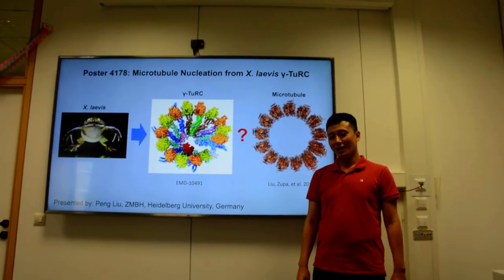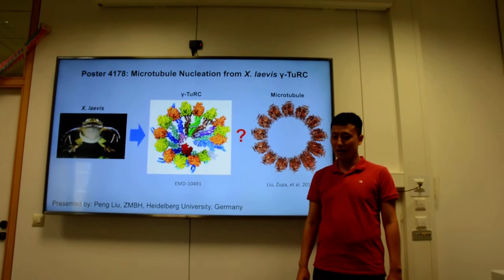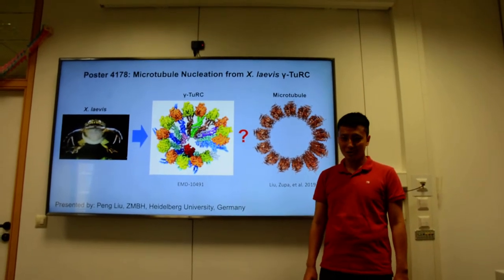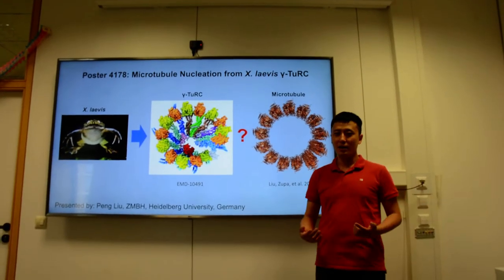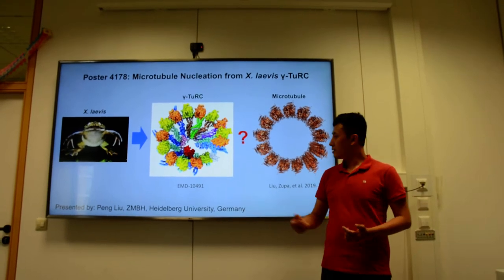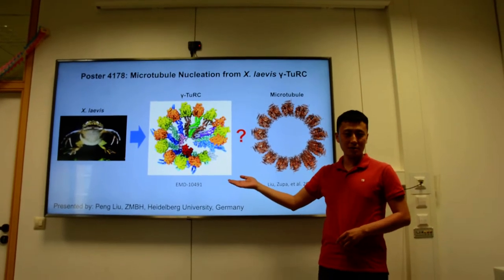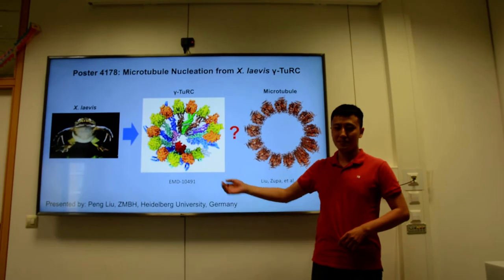From its extracts, I purified the gamma-tubulin ring complex, the γ-TuRC, a very potent complex for microtubule nucleation. And we solved the structure of the γ-TuRC with cryo-electron microscopy.